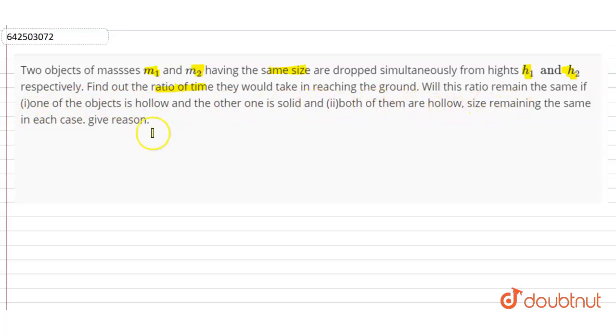So here in this question we are given that the two objects have masses m1 and m2. Let us write: the mass of the two objects are m1 and m2. Next is that they are falling from the heights h1, so height is given to us as h1 and h2.